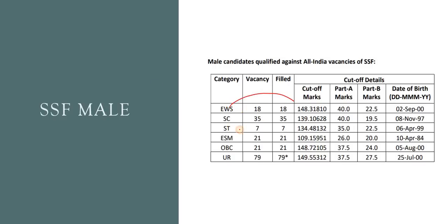If you have EWS, it is 566. SC is 134. OBC and UR — it is a very bad competition. If you have already studied, it can be selected. If you want to select it, you can select it.